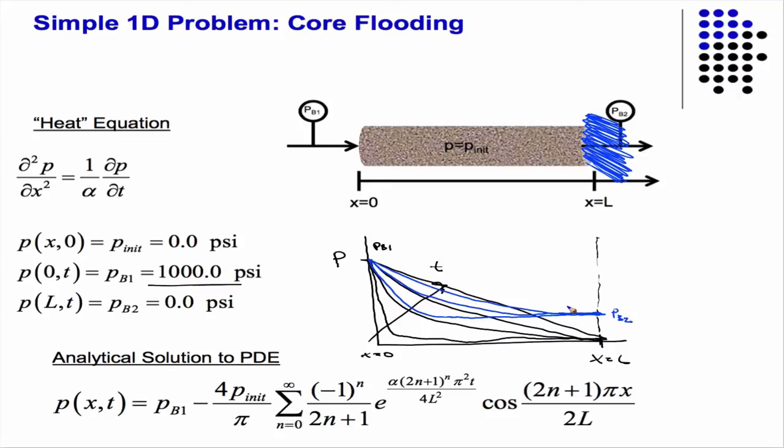So, constant pressure versus constant flow or no flow. Constant flow could also be no flow, zero.